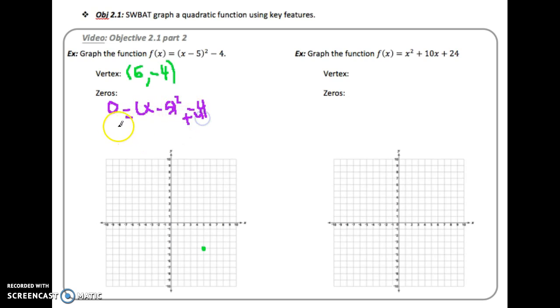So first I'm just going to add 4 to both sides. And so I'm going to get 4 = (x - 5)². And now in order to get rid of that square I'm going to take the square root of both sides. So I'm going to get the square root of 4 is plus or minus 2 = x - 5. So that means I have x - 5 = 2 or I have x - 5 = -2.